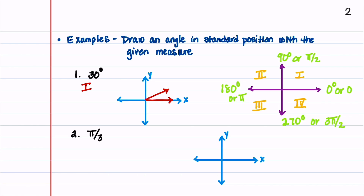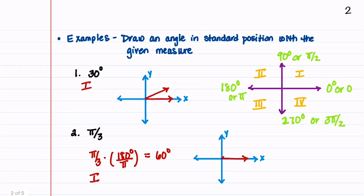Our next angle is pi over 3. It may be easier to convert this to degrees in order to draw it. So we have pi over 3, and we're going to multiply it by 180 degrees divided by pi to change it to degrees. This gives us 60 degrees. We can now note that this is in our first quadrant, and we'll draw it — beginning again with the initial side, and then the terminal side goes up at 60 degrees.